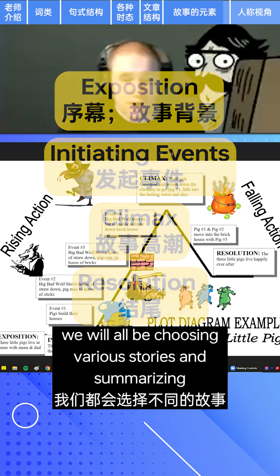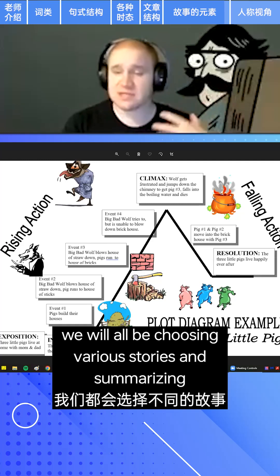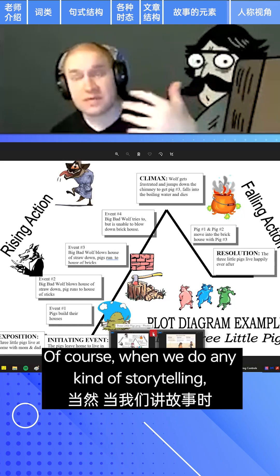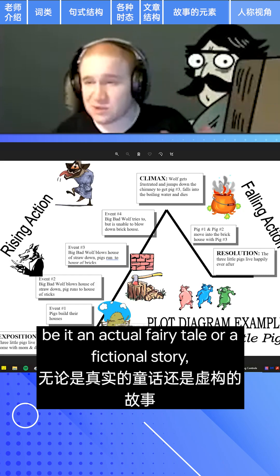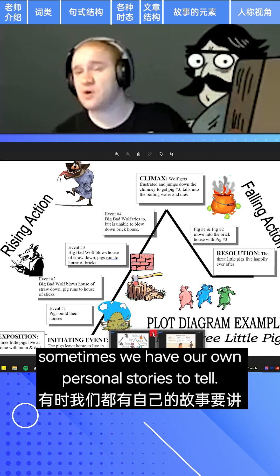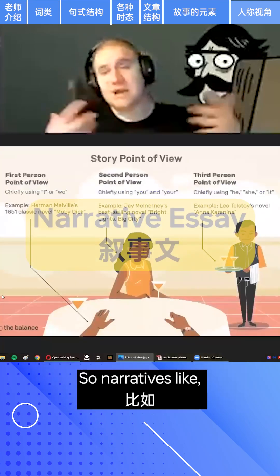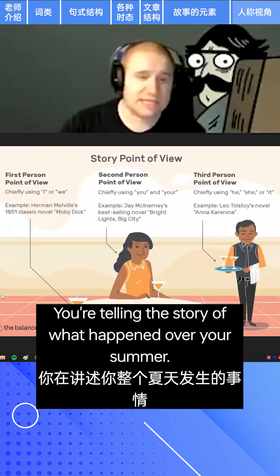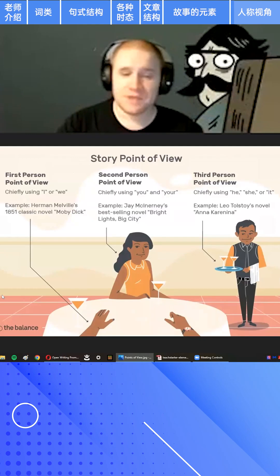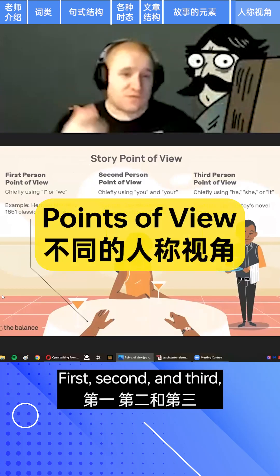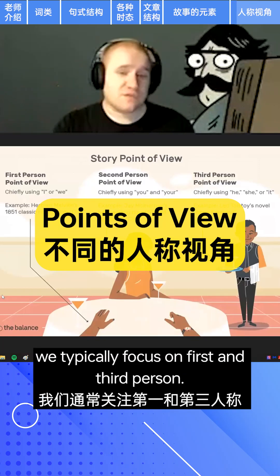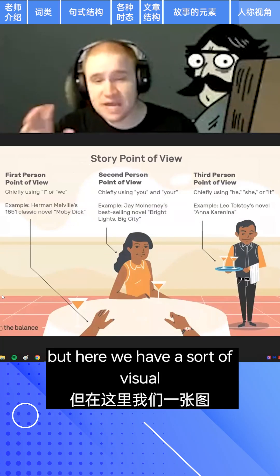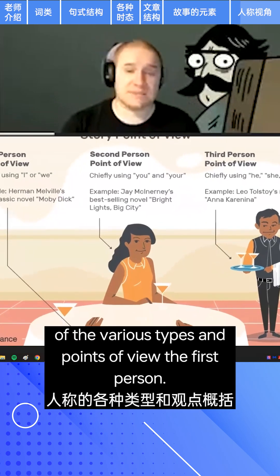You can start a new story from there if you want. We will all be choosing various stories and summarizing them. When we do any kind of storytelling — whether it's a fairy tale or a fictional story — sometimes we have our own personal stories to tell. For example, what did you do over the summer? That would be a personal narrative. We have to consider various points of view: first, second, and third. We typically focus on first and third person — second person is in a weird place.